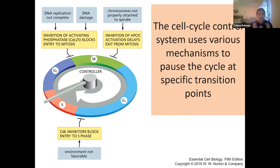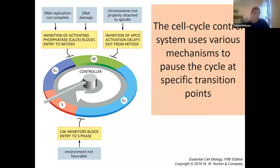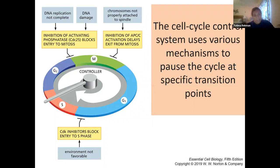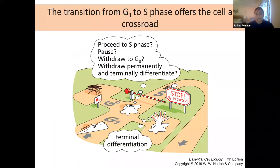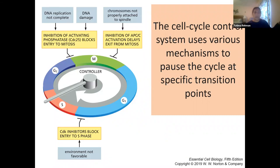One of the ways cells trigger cell cycle and start moving from G0 into S phase is by receiving mitogenic signals. Those mitogenic signals are typically small secretory molecules binding to a mitogen receptor or growth factor receptor. These are examples of oncogenes we discussed in the last class — mitogenic signals activating growth factor receptors on the membrane, creating intracellular signaling cascades leading to activated cyclin-CDK complexes in the nucleus triggering movement from one phase to the next.